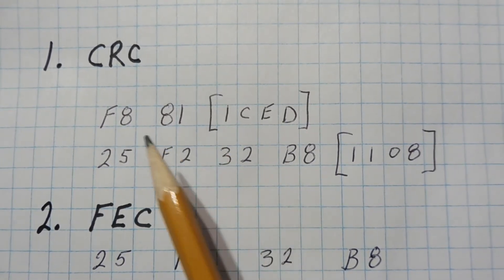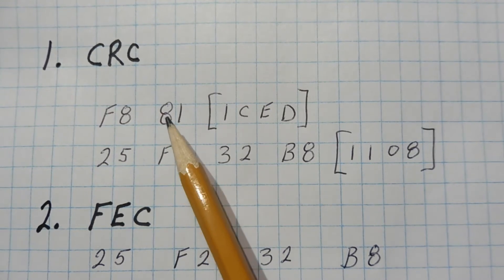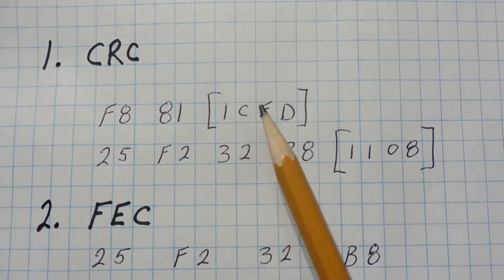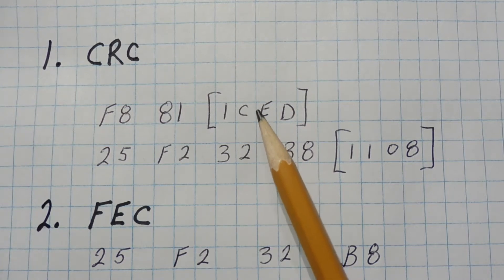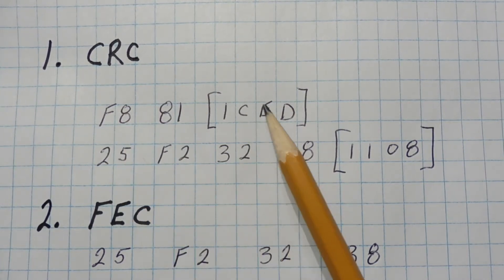So here's our data packet, F881, and we calculated a 16-bit CRC checksum, 1CED, and that checksum is tacked on to the end of the packet and sent along with the packet.